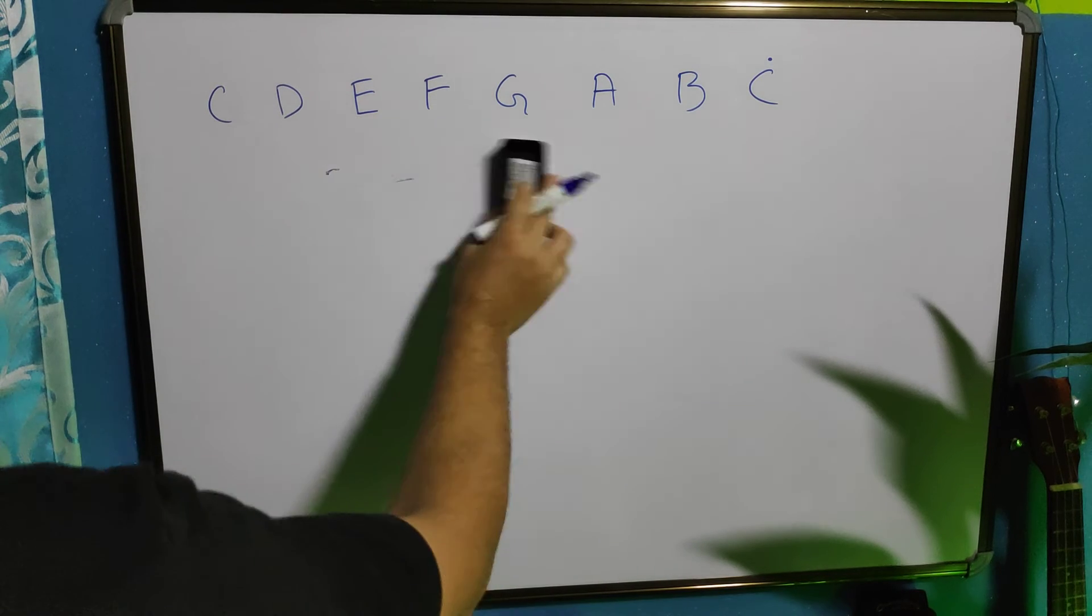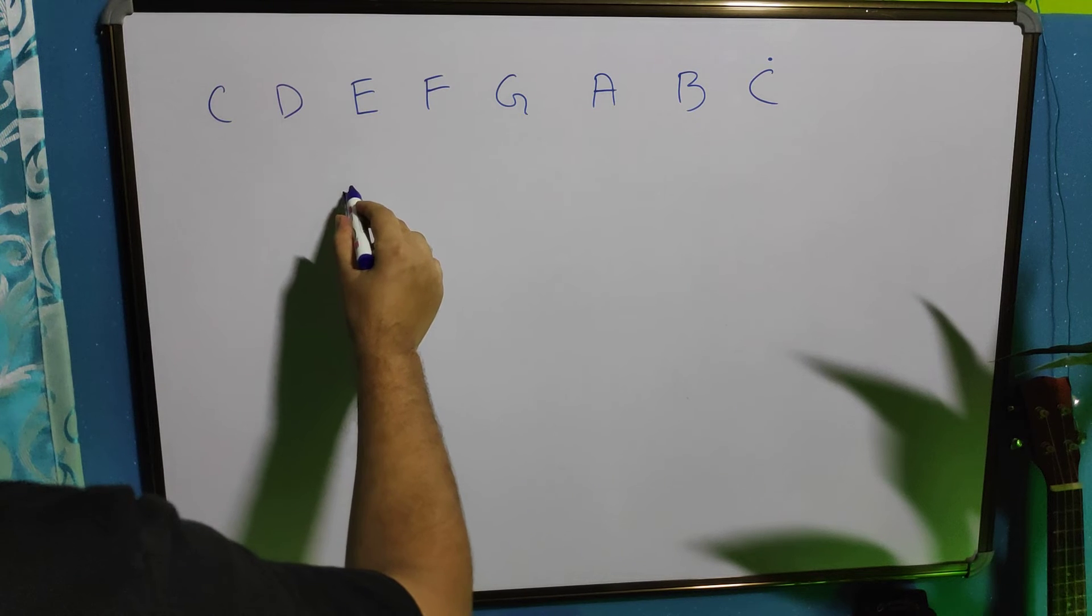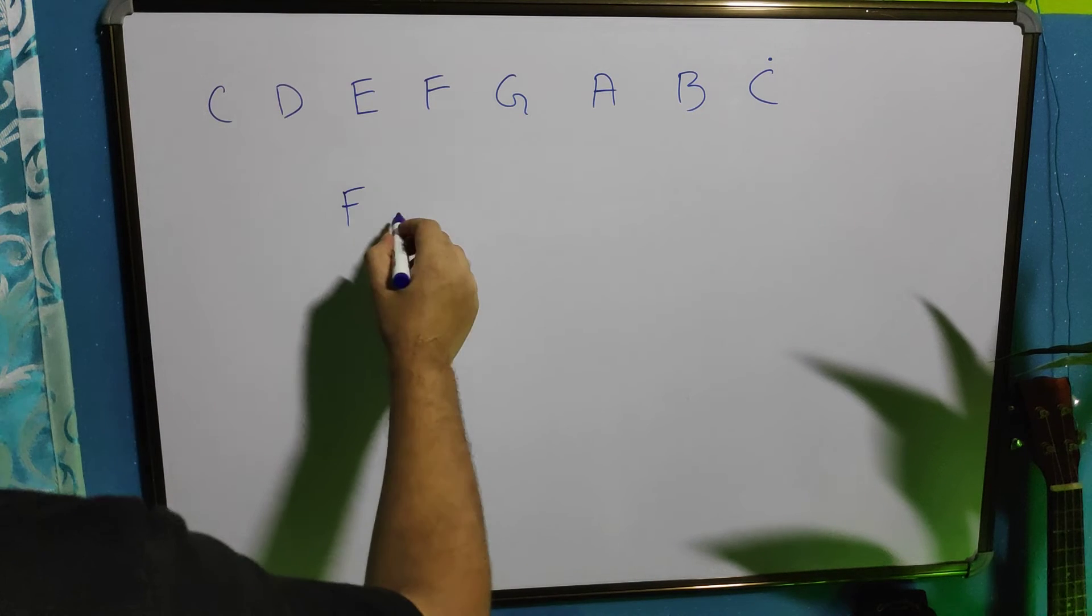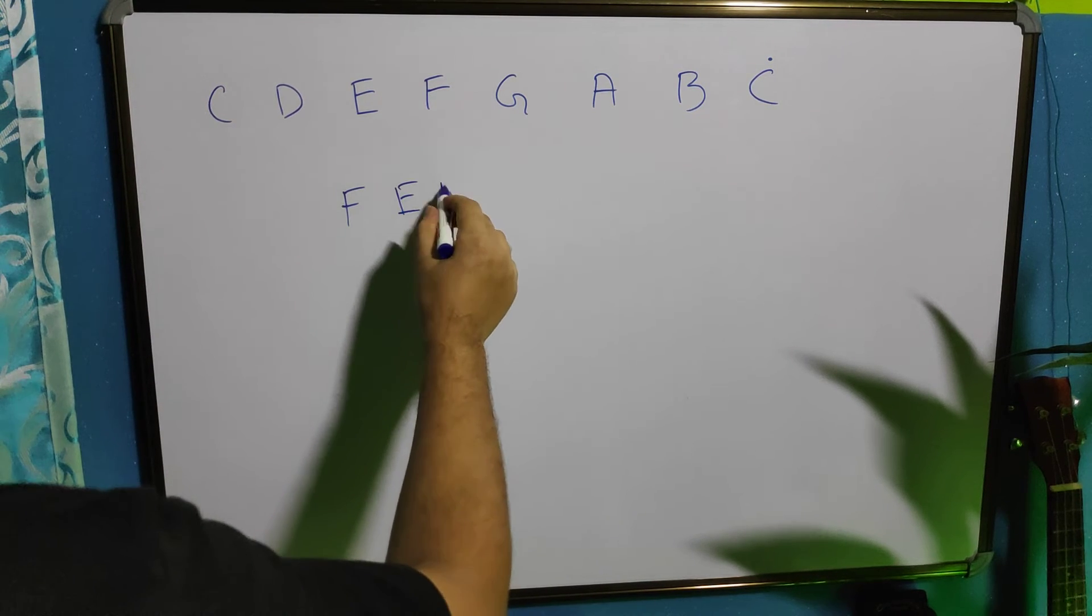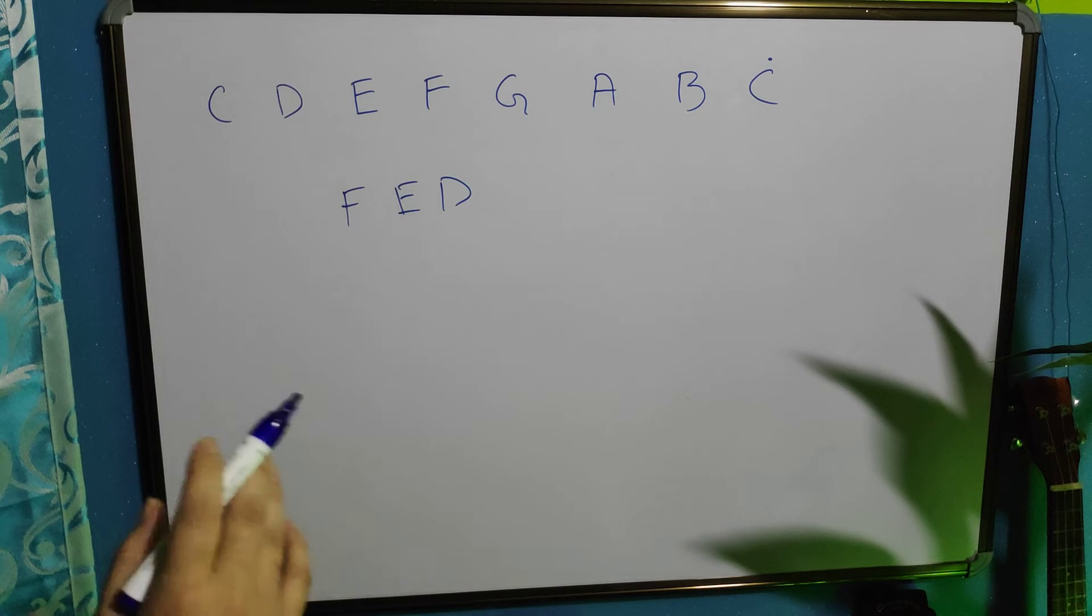Now it might be reverse as well. For example, F, E, D. If we play F, E, D, then it is descending obviously. It is also consecutive descending notes.